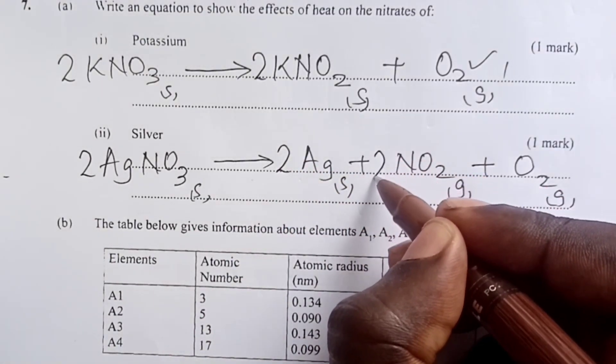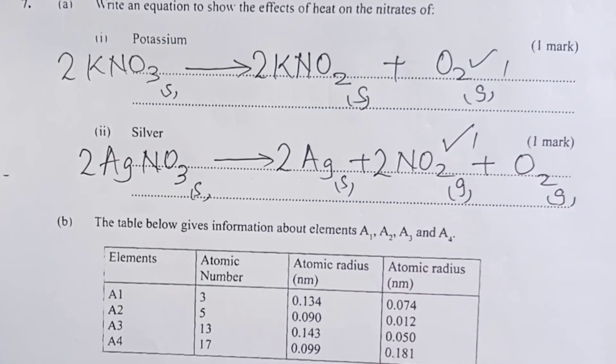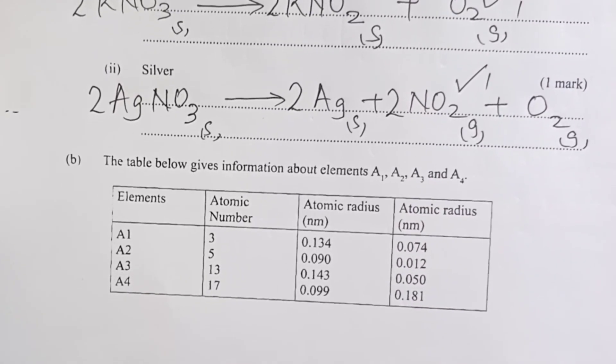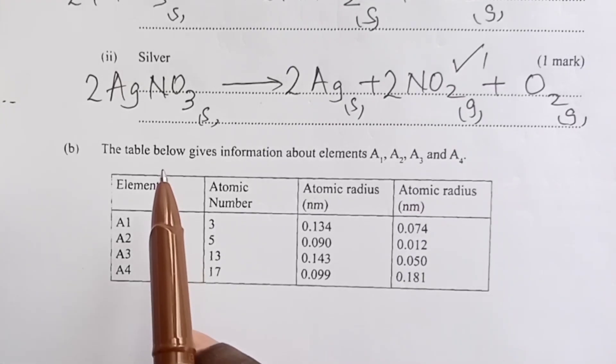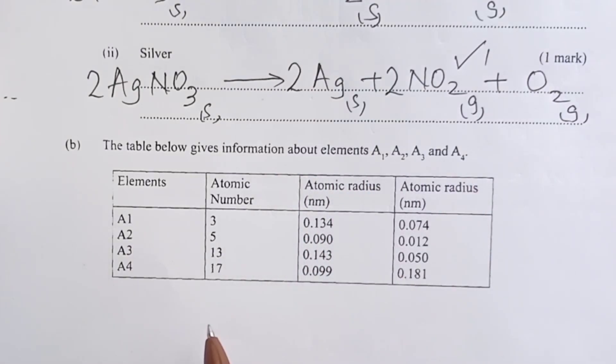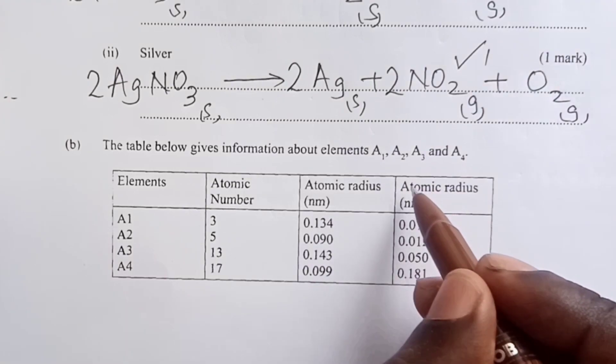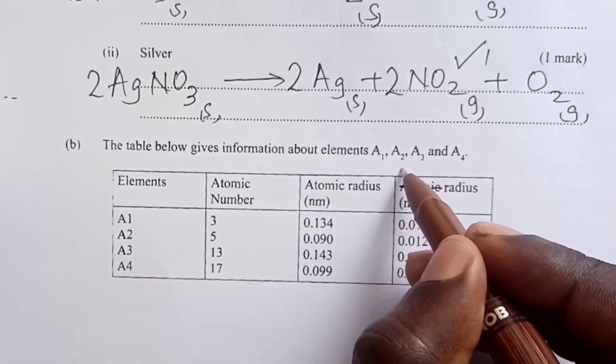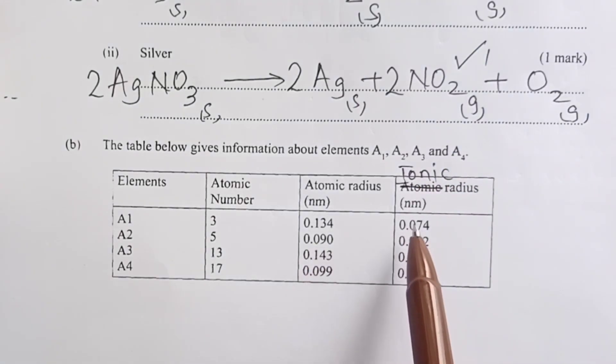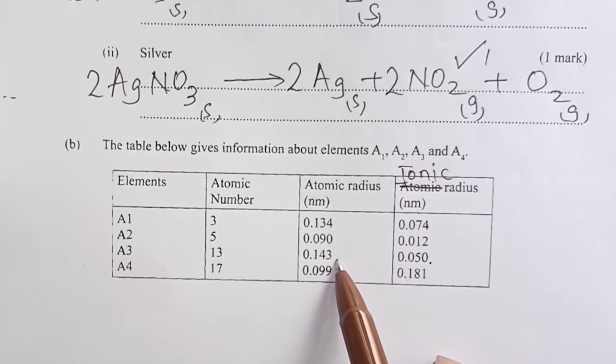Now to some elements in the periodic table. The table below gives information about elements A1 to A4. We have elements, atomic number, atomic radius, and here there's a misprint - it should have been ionic radius. Take note that the ionic radius of A1 to A3 is actually less than their atomic radius.